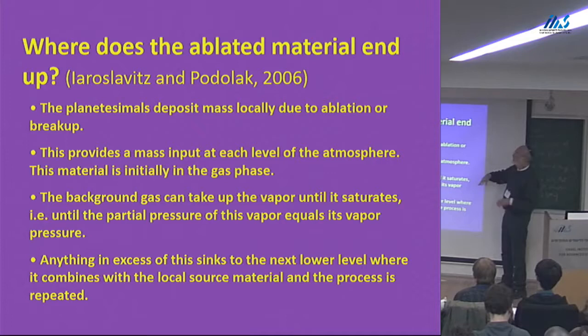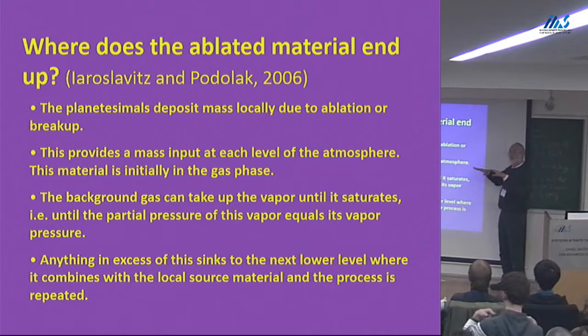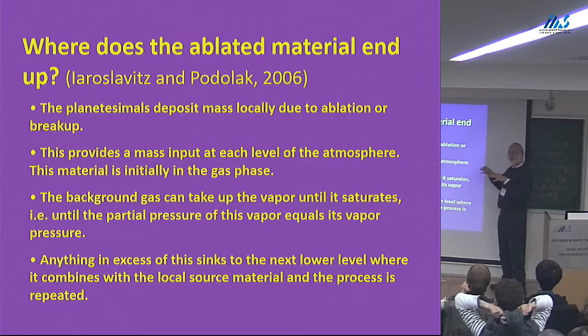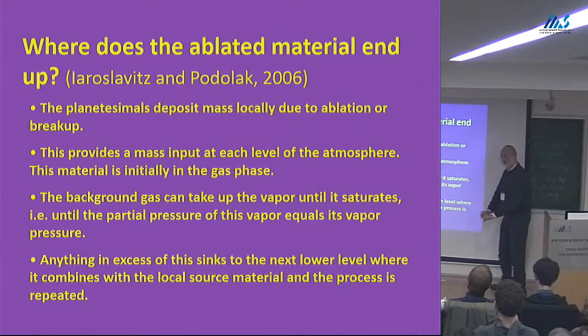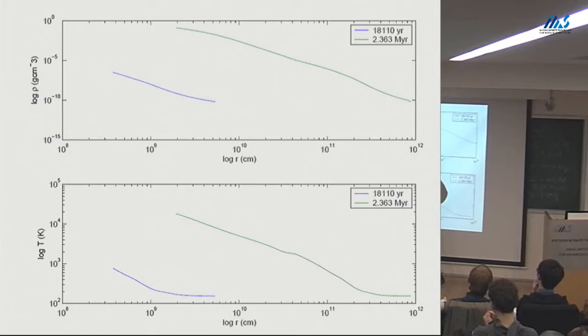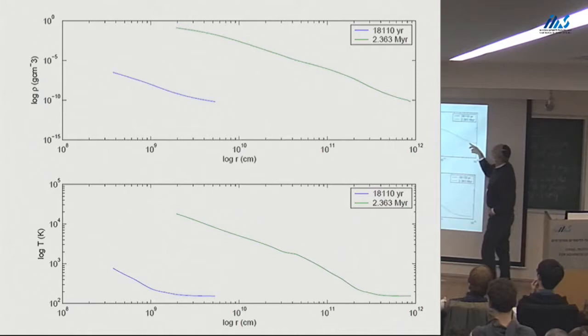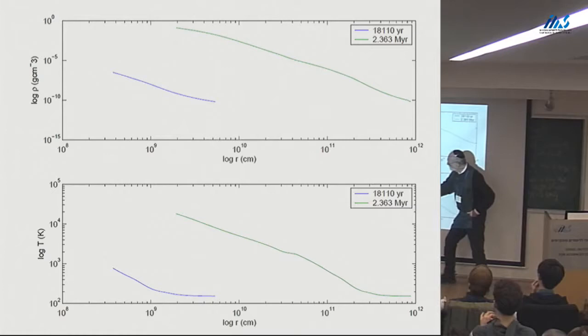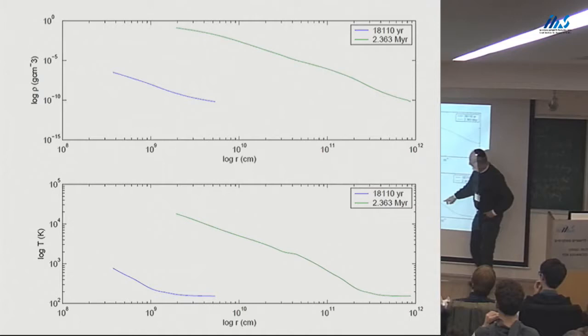The idea is: planetesimals come in, heat up passing through the gas, and vaporize. The vapor gets deposited where it gets deposited. Then you look at the vapor pressure — will that vapor be supersaturated or not? If it's supersaturated, some of the stuff condenses and falls to lower levels, and you keep letting it fall until it revaporizes. This is just to give a feeling for the atmosphere — we did this as the atmosphere grows as a function of history. At 18,000 years the temperature at the center is about 1,000 Kelvin; later on it gets up to 10,000 Kelvin.